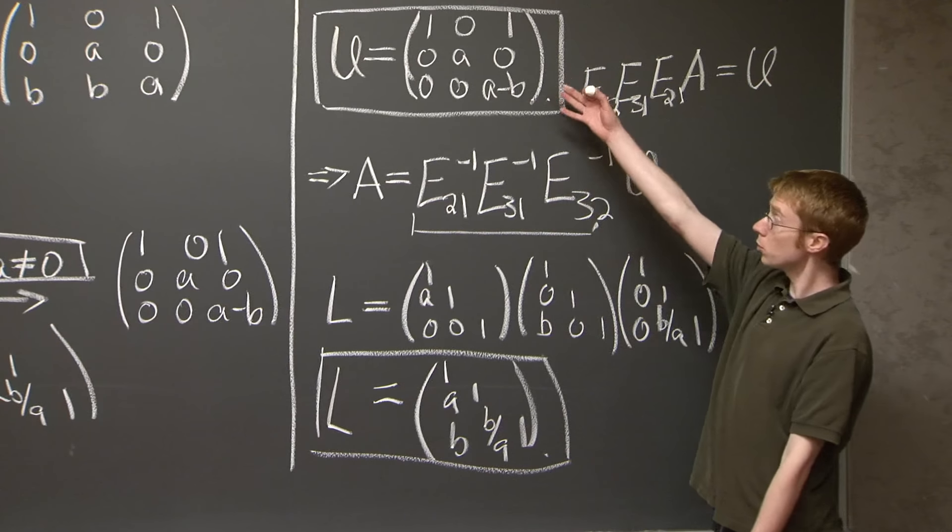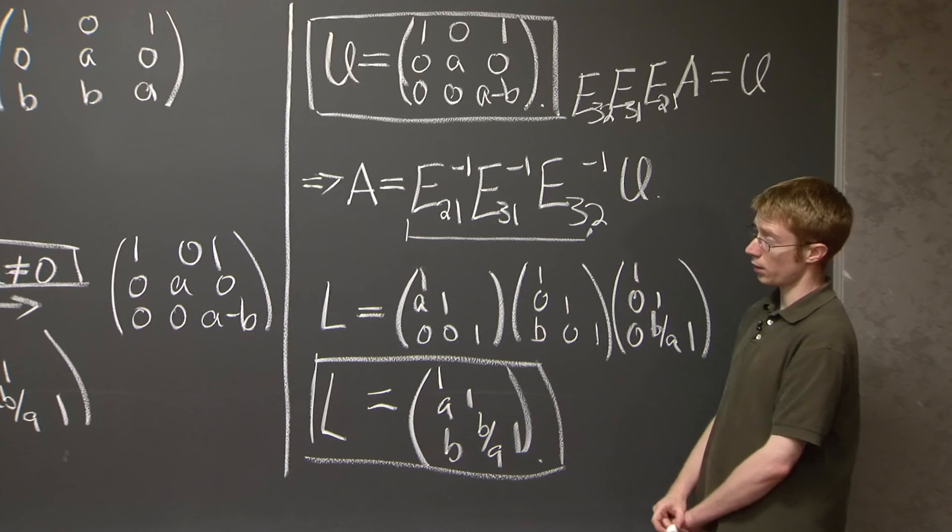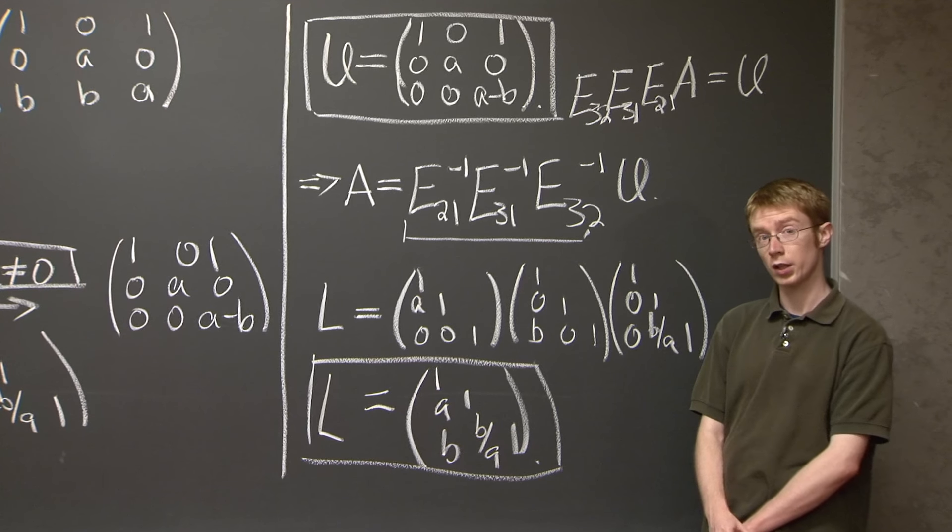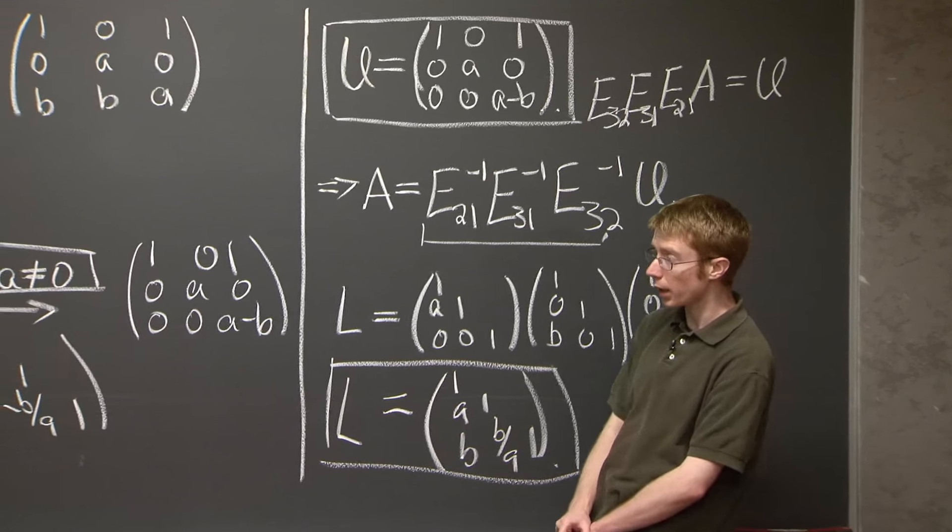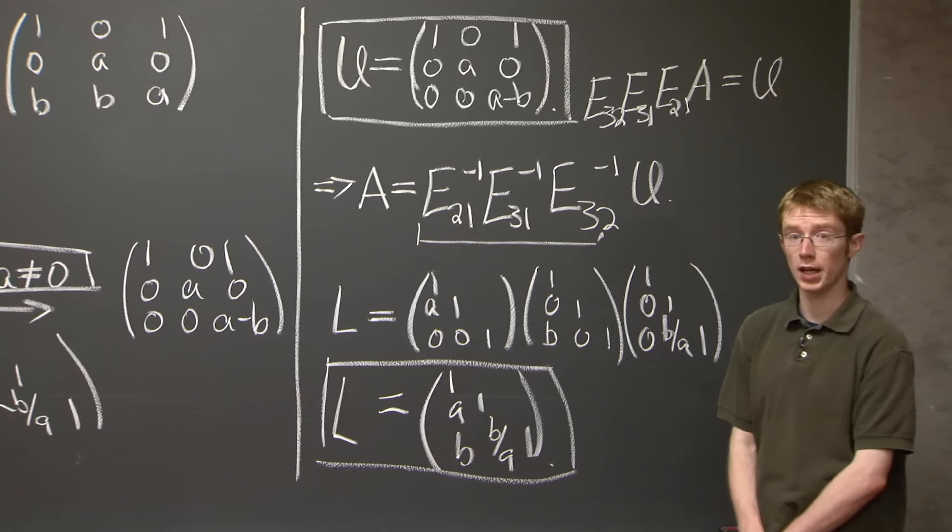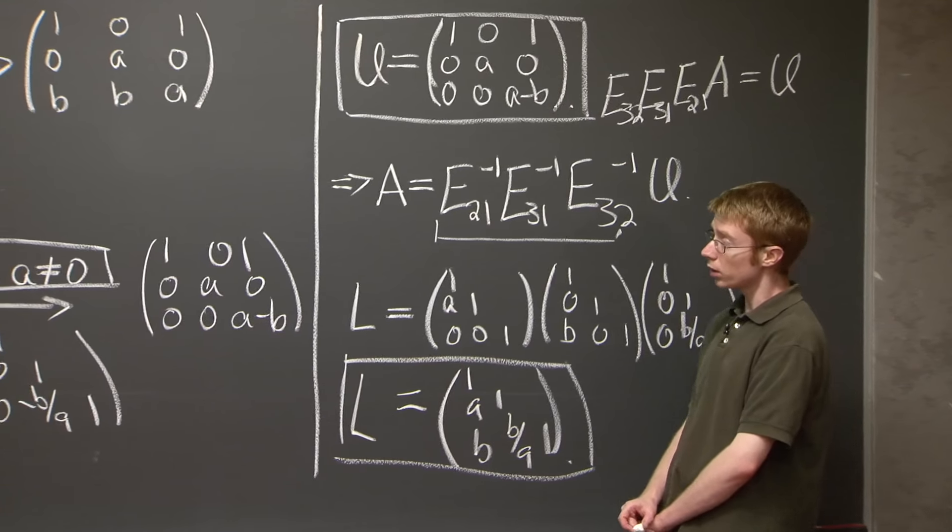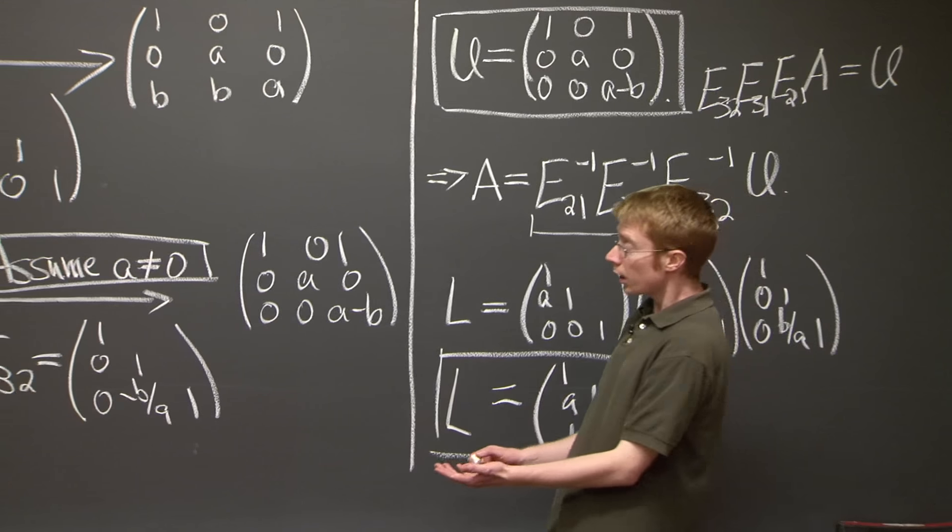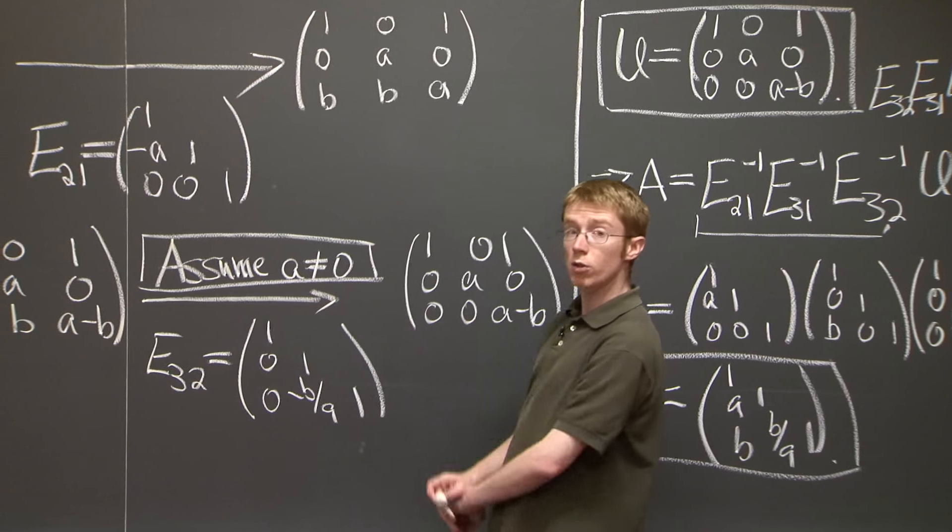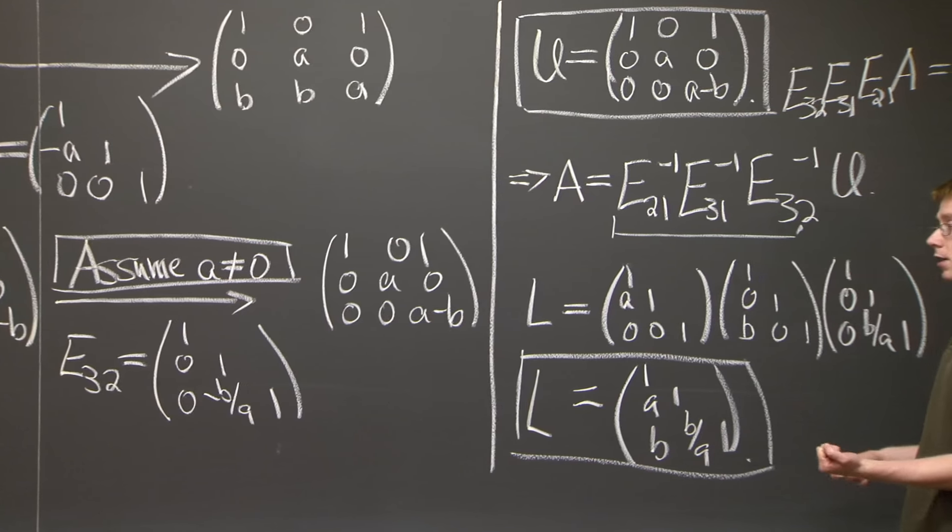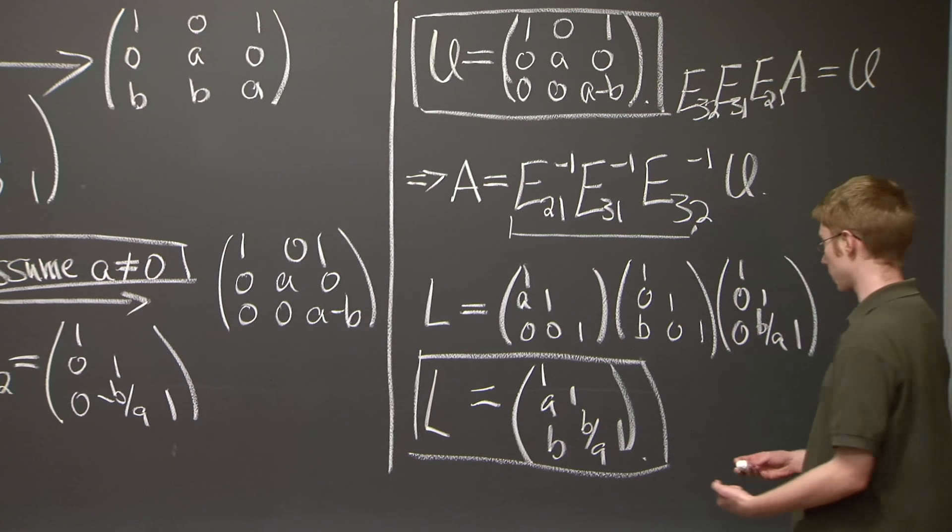So now we have our U matrix and our L matrix. And we're done with the first part of the question. The second part asks us for which real numbers a and b does this decomposition exist? Now let's go back and remember that at one point we had to assume that a was non-zero. That was the only assumption we had to make to get this decomposition.